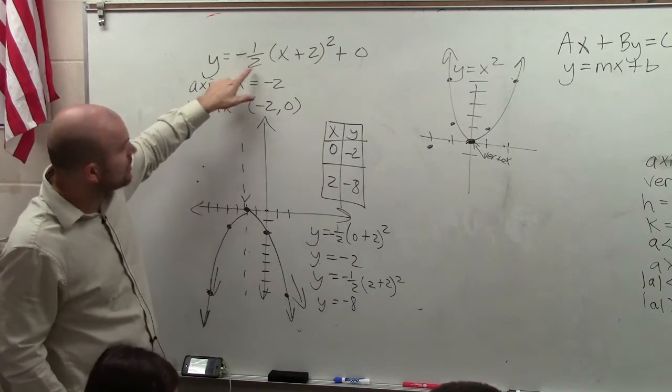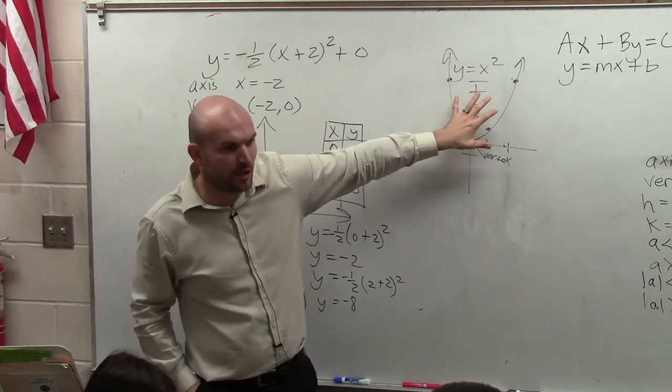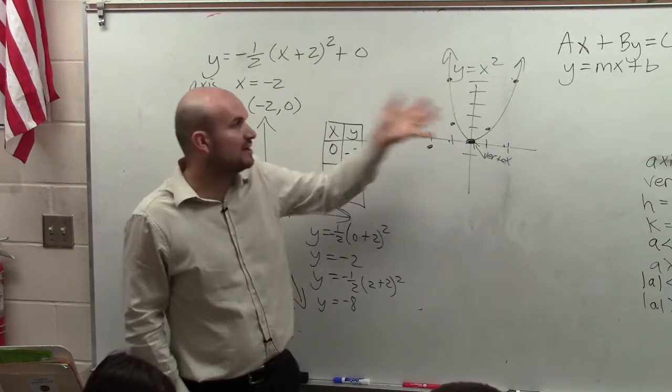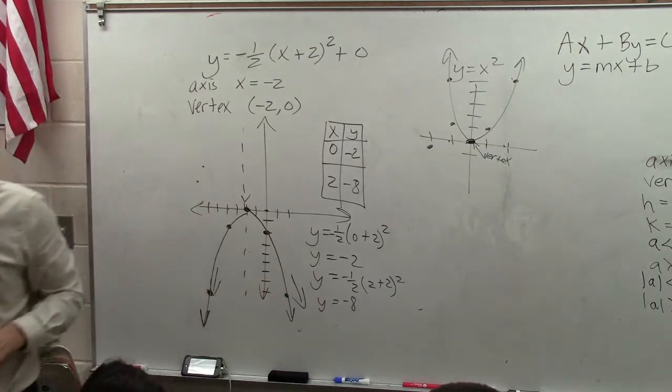And then if you don't have an A, you can just use the parent graph to help you find the remaining coordinates. But if you do have an A, then I'd recommend using a table to find the remaining values.